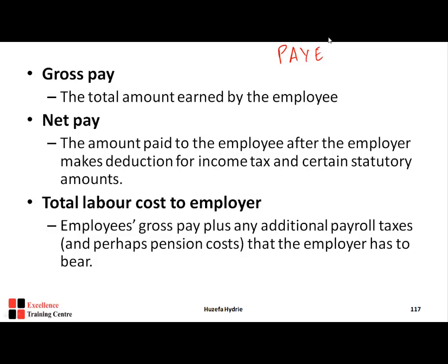Regarding overtime: when you work more than the standard hours, those extra hours are overtime. The overtime rate is made up of two components: the basic rate plus an overtime premium. For example, if the basic rate is $10 and the employer offers time and a half, the overtime rate is $15 — of which $10 is basic and $5 is the premium.